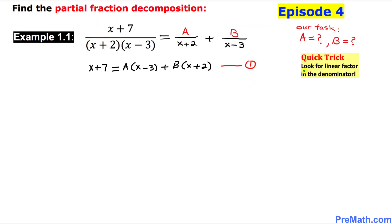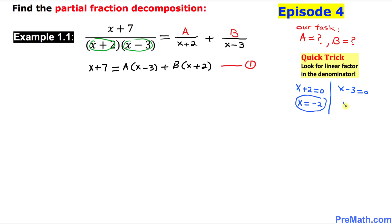In the next step, we have a quick trick: look for the linear factors in the denominator. There are two linear factors — x plus two and x minus three. I'm going to set both of them equal to zero. The first gives x equal to negative two, and the second gives x equal to positive three. We're going to use these two values now.